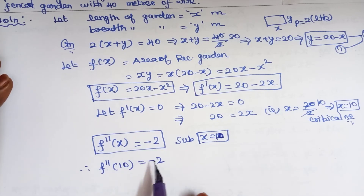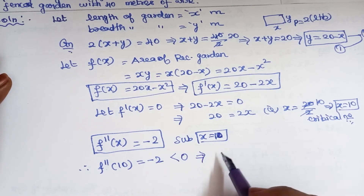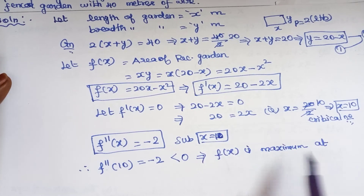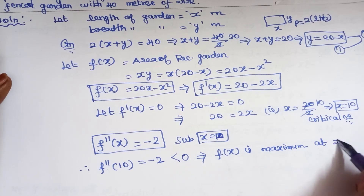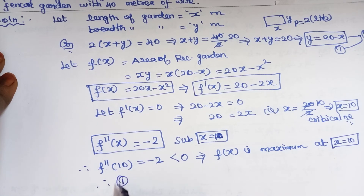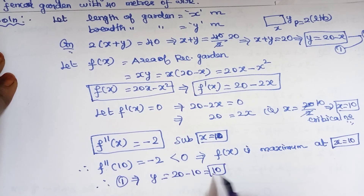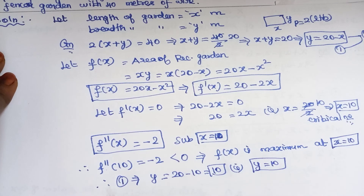Since the second order derivative is negative, less than 0, this implies f of x is maximum at x equal to 10. Substituting x equal to 10 into equation 1: y equals 20 minus x equals 20 minus 10, so y equals 10.